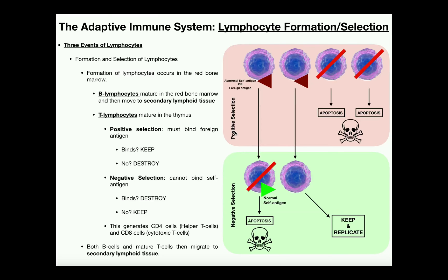B lymphocytes and T lymphocytes are both lymphocytes and are both made in the red bone marrow. However, B lymphocytes stay in the red bone marrow during their maturation — the B stands for bone. In contrast, T lymphocytes are made in the red bone marrow but migrate to the thymus to complete their maturation — the T stands for thymus. Both B lymphocytes and T lymphocytes undergo positive and negative selection. For T lymphocytes we're talking about a receptor, whereas for B lymphocytes we're talking about an antibody or immunoglobulin.